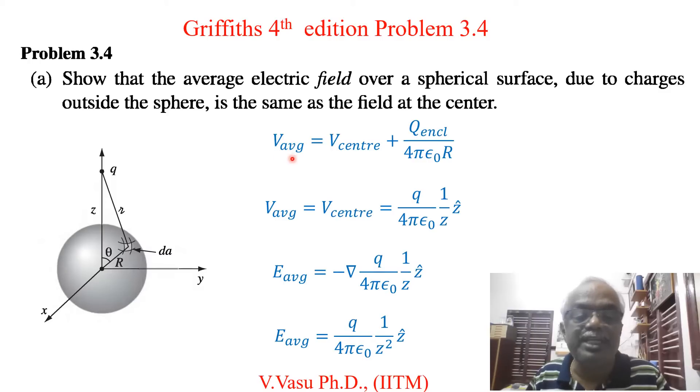The average potential V_avg in the sphere is equal to the potential at the center V_center plus the charge enclosed Q_encl divided by 4πε₀R, where R is the radius of the sphere.